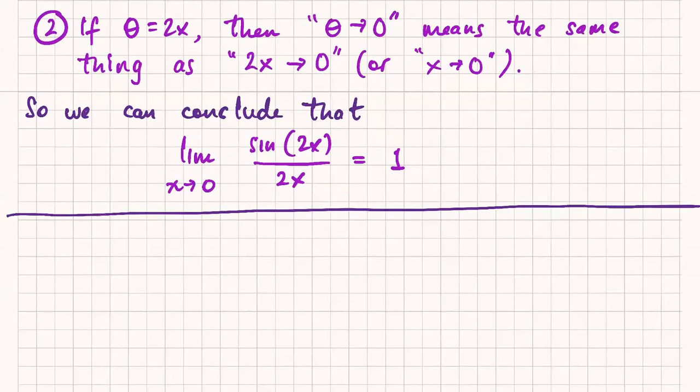But you tell us what the value of these two limits are. So this is very similar to what we just did. So if we agree that limit as x goes to 0 of sine of 2x over 2x is equal to 1,